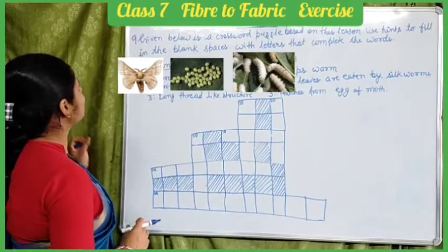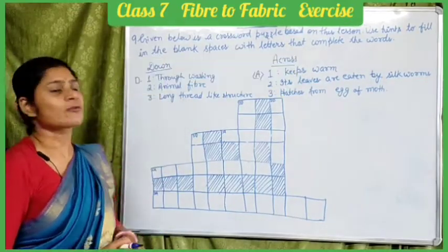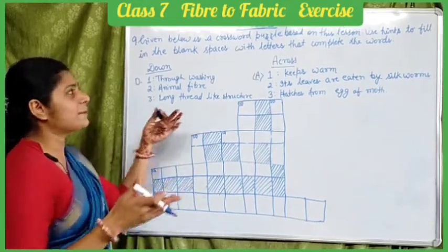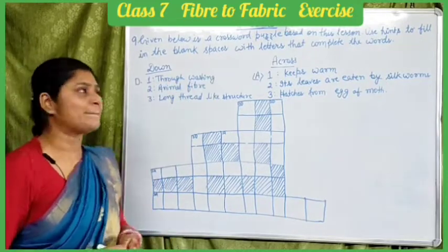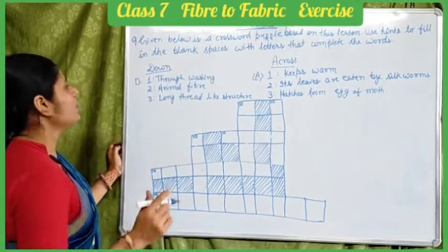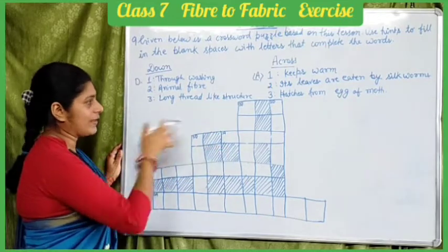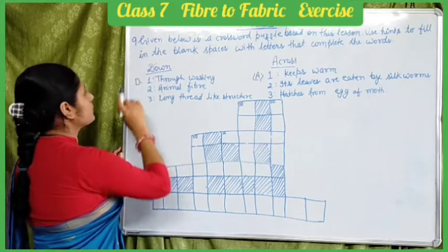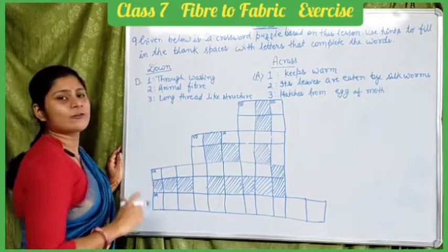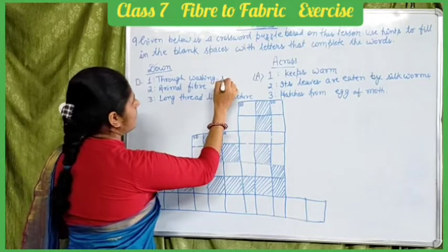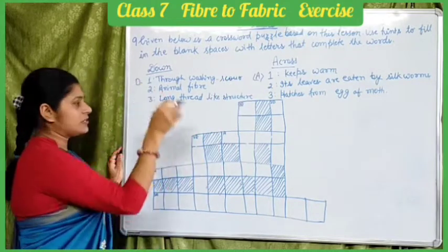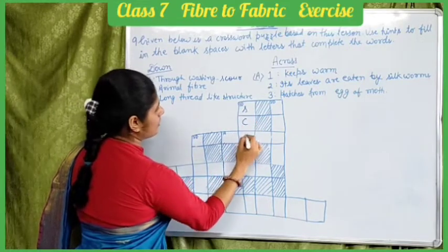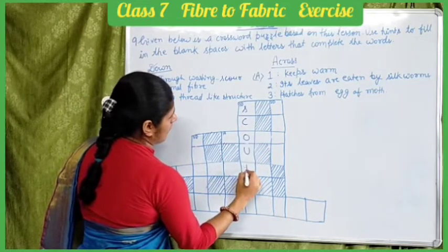The next question is a crossword puzzle based on the chapter. Fill in the blank spaces using the given hints. For the 'down' clues: D1 is 'throw washing' which refers to scouring, so D1 answer is 'scouring.'